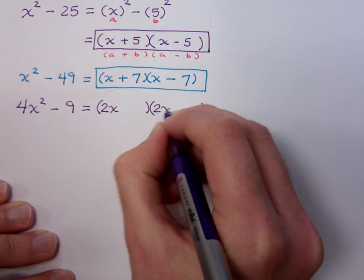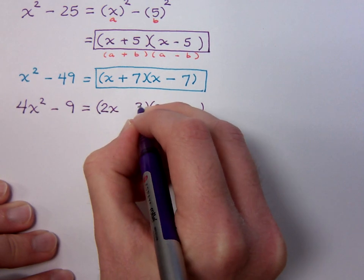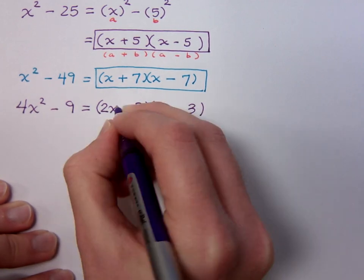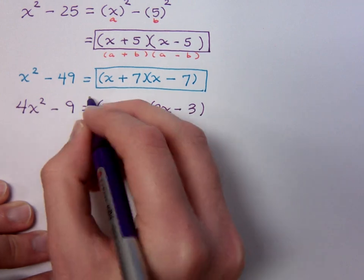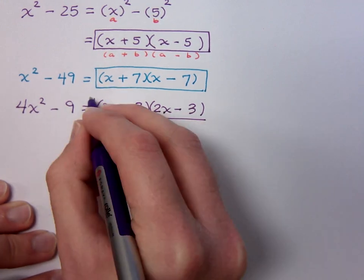So, 2x times 2x, 9 is the square of 3, so 3 and 3, one plus, one minus, just like the formula says, and you are done.